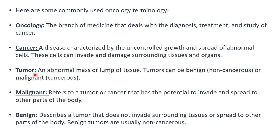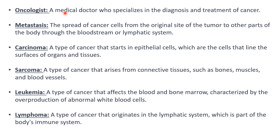When you come across the term tumor, it is diagnosed whether it is cancerous or non-cancerous. Even in cancer there are two types: benign and malignant. A tumor is an abnormal mass or lump of tissue. Malignant tumor refers to a tumor that has the potential to invade and spread to other parts of the body. A benign tumor does not invade surrounding tissues or spread — it is usually non-cancerous and non-harmful. An oncologist is a medical doctor who specializes in the diagnosis and treatment of cancer.